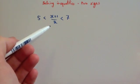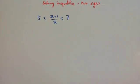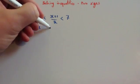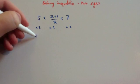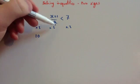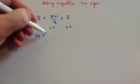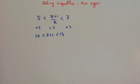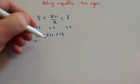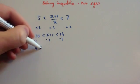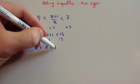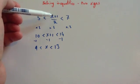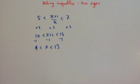This time we've been asked to solve: (x plus 1) divided by 2 is bigger than 5 but less than 7. We want to get rid of the divided by 2, so we times everything by 2. 5 times 2 is 10; (x plus 1) divided by 2 times 2 leaves x plus 1; and 7 times 2 is 14. Then take away 1 from everything, leaving 9 is less than x which is less than 13. Let's check with 11: 11 plus 1 is 12, half of that is 6, and 6 is between 5 and 7. Fantastic.